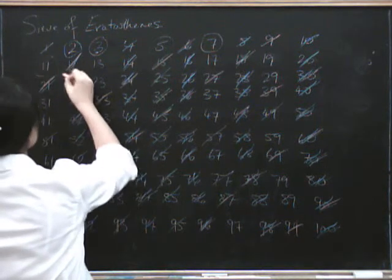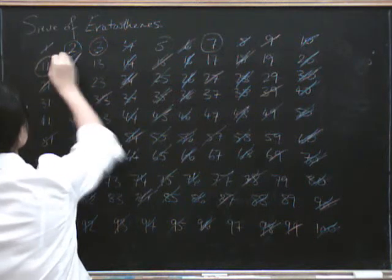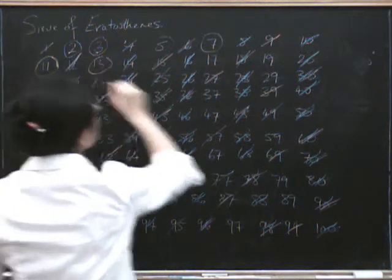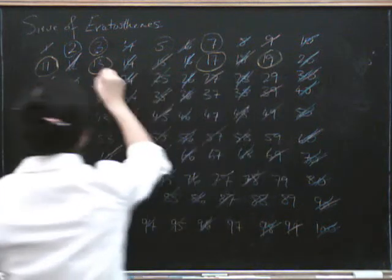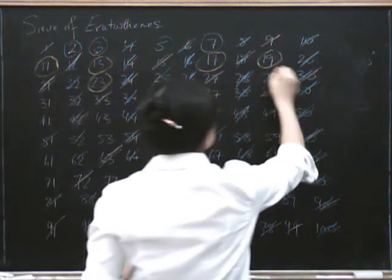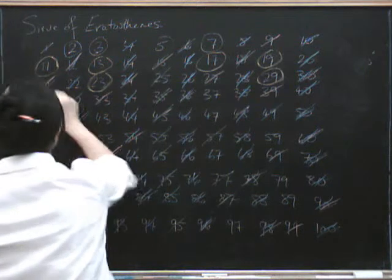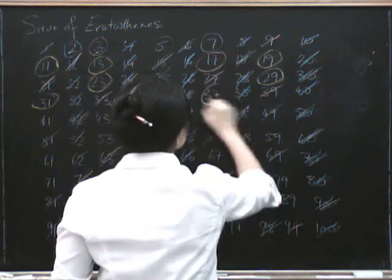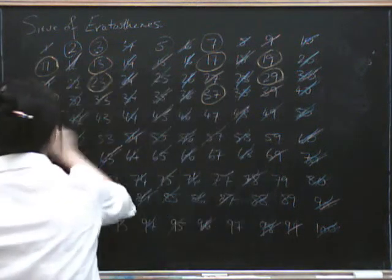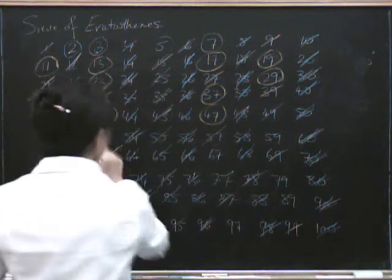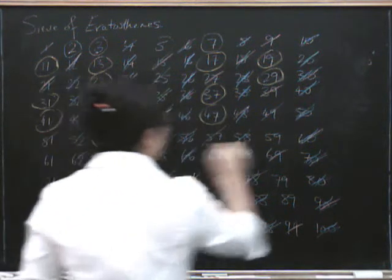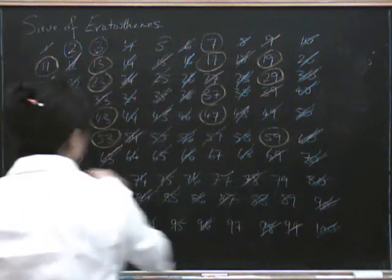There's 11. I hope this is fairly visible. 11, 13, 17, 19, 23, 29, 31, 37, 41, 43, 47, 53, 59, 61.